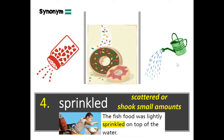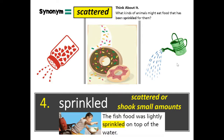A synonym — a word that means the same as 'sprinkled' — is 'scattered': s-c-a-t-t-e-r-e-d. In the second column after you write 'sprinkled,' write 'scattered.' The root word is 'scatter' with -ed at the end — past tense, just like sprinkled. Think about it: what kinds of animals might eat food that has been sprinkled for them?